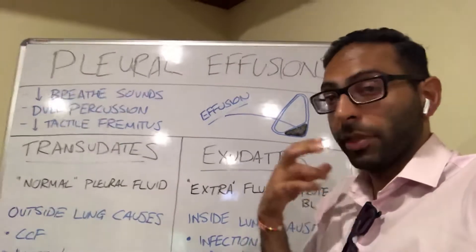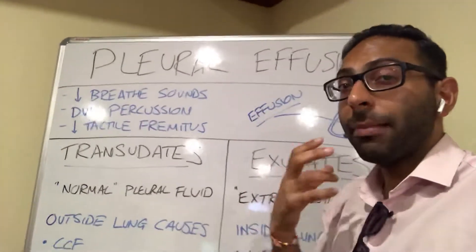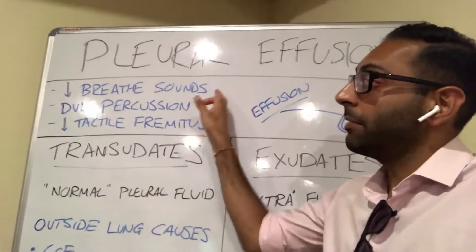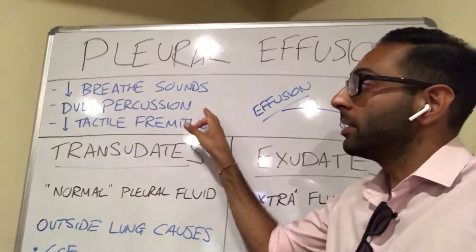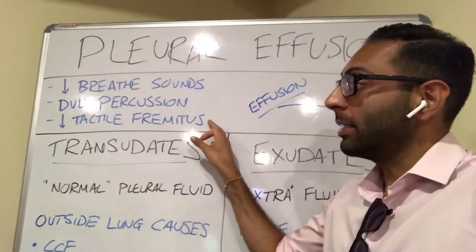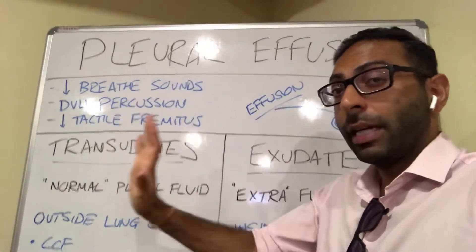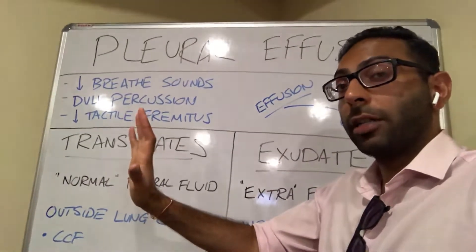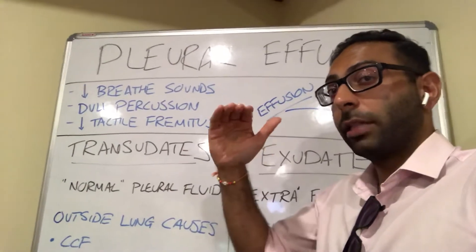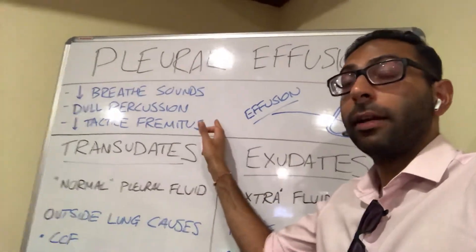Clinically, people come in with shortness of breath, they may come with pleuritic pain. Clinically, when you examine them, you get a couple of key signs: decreased breath sounds over the affected lung, dullness to percussion, and also things like decreased tactile fremitus. You may get things like mediastinal shift if it's a particularly large effusion. You may also get things like bronchial breath sounds on top of the effusion. There are a few classic ones not to forget.